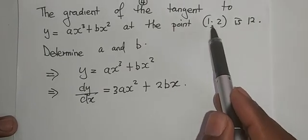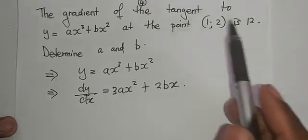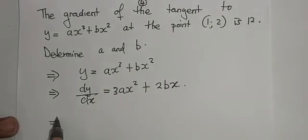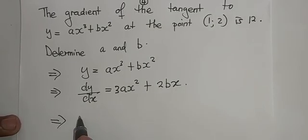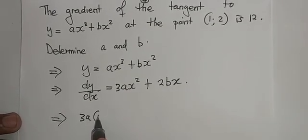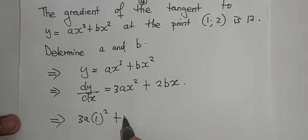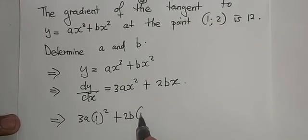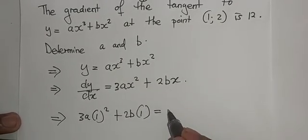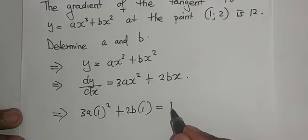But we know that at x equals 1 the gradient is 12, which means where there is x we substitute with 1. That will become 3a times 1 squared plus 2b times 1, and we are saying it equals 12.